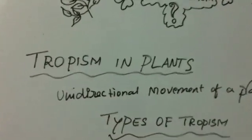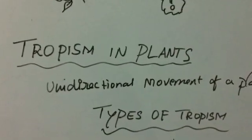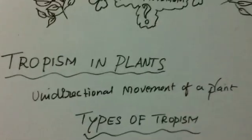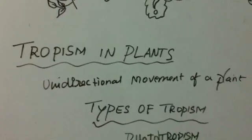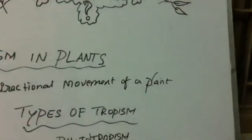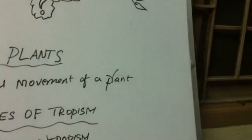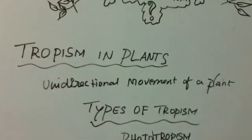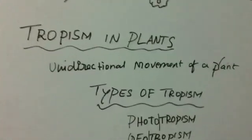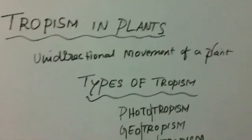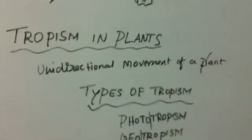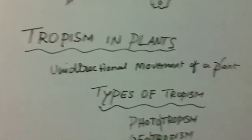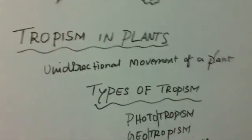Now we will enter into the topic of tropism in plants. What does tropism mean? Tropism is a unidirectional movement of a whole or a part of a plant towards the direction of a stimulus. The stimulus could be the plant's requirements such as food, nutrients, etc.